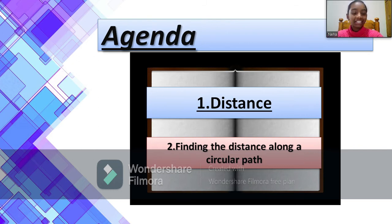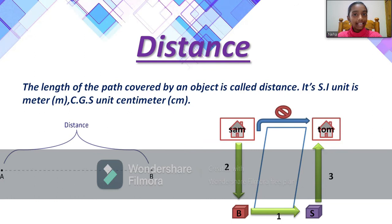So let us go to distance. The length of the path covered by an object is called distance. Its SI unit is meters and CGS unit is centimeters. That means if there are two points A and B and you are moving from point A to B, then the length you have covered is called distance. Now you may say that I'm saying length equals distance. That's absolutely right. Length is equal to distance.